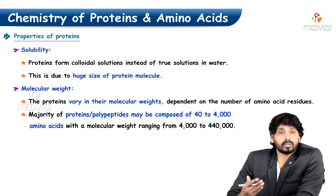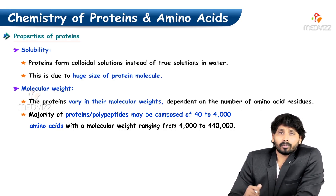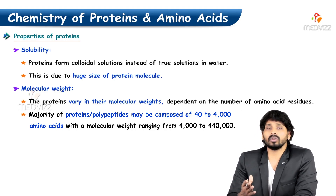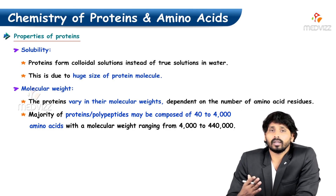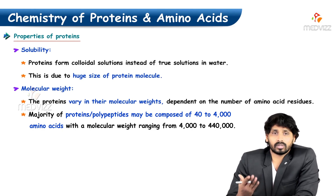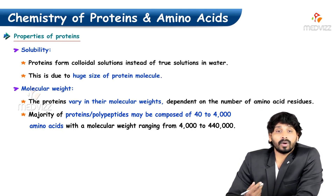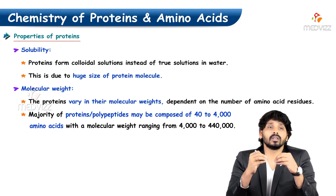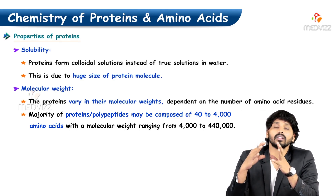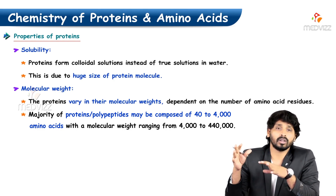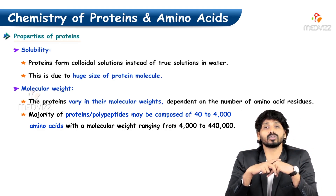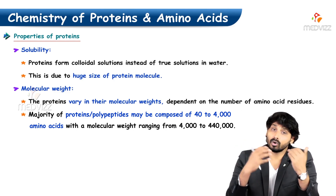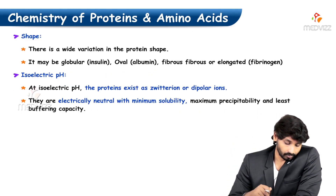When you take the term solubility, most of the proteins are soluble in nature. When they mix up with water, they form colloidal solutions because of their huge size. Regarding molecular weight, different proteins have different molecular weights, and this varies based on the number of amino acids or polypeptides in the particular protein. Most proteins are polypeptides composed of 40 to 4,000 amino acids, with molecular weights ranging from 4,000 to 4,400,000 Daltons.